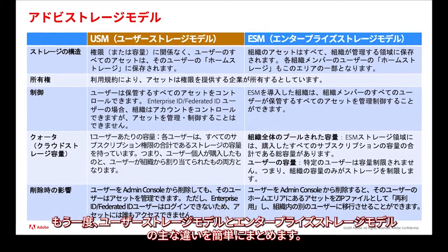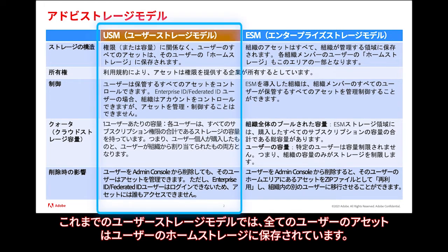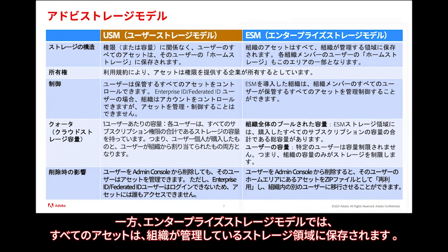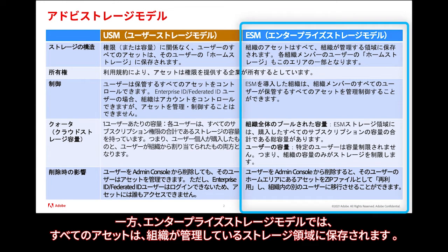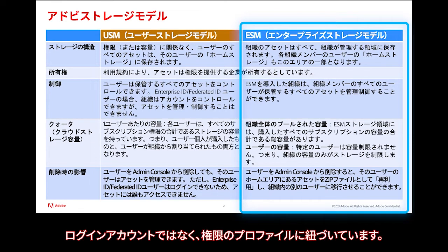Here is a brief summary of the key differences between user storage and enterprise storage models. In a user storage model, all of the user's assets are stored in the user's home storage. Whereas in an enterprise storage model, all of the org assets get stored in an area controlled by the organization, regardless of the user who creates those assets. The home storage for each org member is part of the business directory, and that organizational member is a business ID — it is an entitlement profile, not a login account.